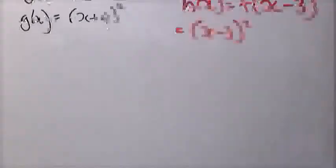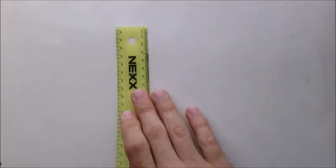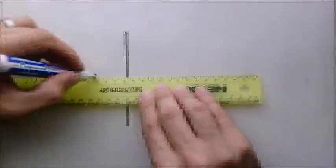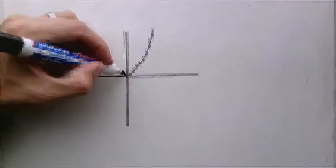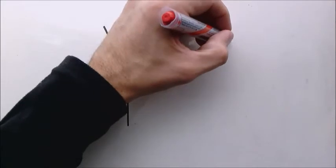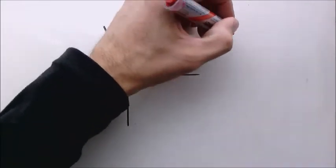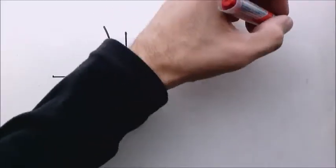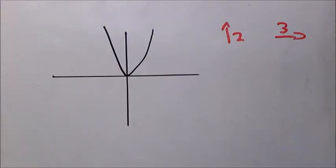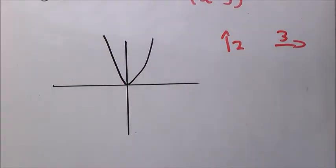Now we look at a combination of vertical and horizontal translation. Starting at the origin as a point of reference, we move 2 units up and 3 units to the right. What we are moving is the turning point, and the rest of the graph moves by itself. So function f gives us f(x) = x²; the new turning point becomes (3, 2), and this is function g.